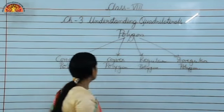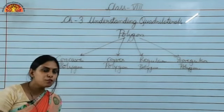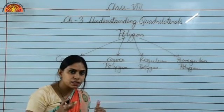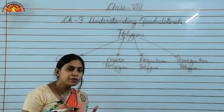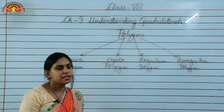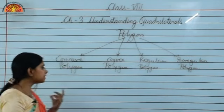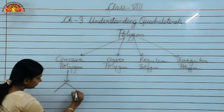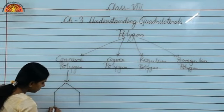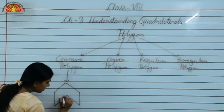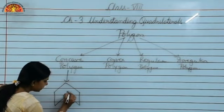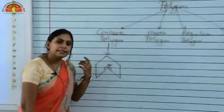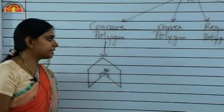Let us discuss what is a concave polygon. A polygon in which at least one of the angles is greater than 180 degrees is known as the concave polygon. This angle is greater than 180 degrees — so a concave polygon has at least one angle greater than 180 degrees.